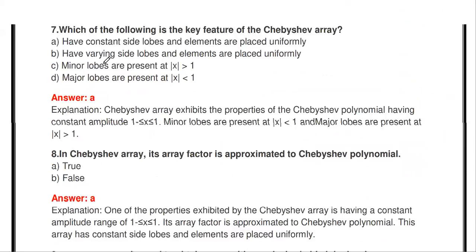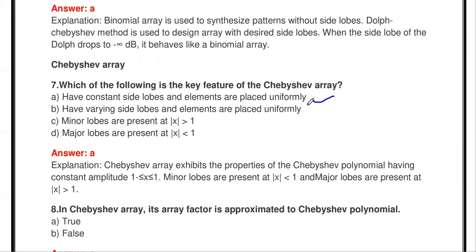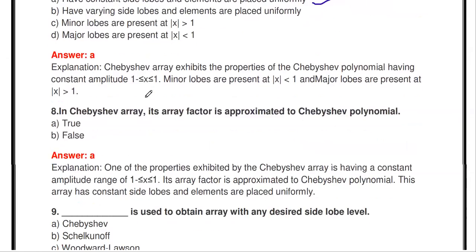Which of the following is the key feature of the Chebyshev array? The correct answer is: it has constant side lobe amplitude and the elements are placed uniformly. The other options — varying side lobes, minor loops at |x| > 1, or major loops at |x| < 1 — are incorrect. The Chebyshev array has constant amplitude side lobes with uniformly spaced elements.